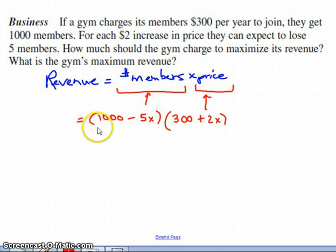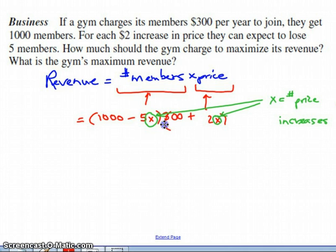The number of members, well, there are 1,000 members currently, as this says, but you're losing five members every time you increase the price. And the price is currently $300, but you're adding $2 every time you increase the price. So before you go any farther, make sure you realize that this x here is the number of times you increase the price, or as I've written here, the number of price increases.